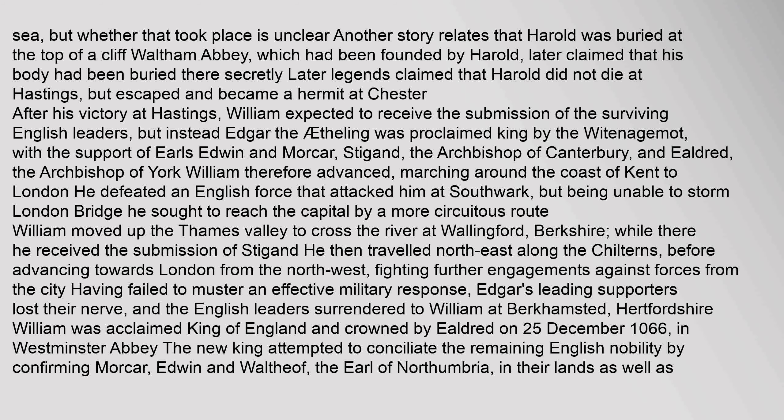After his victory at Hastings, William expected to receive the submission of the surviving English leaders, but instead Edgar the Aetheling was proclaimed king by the Wittenagemot, with the support of Earls Edwin and Morcar, Stigand the Archbishop of Canterbury, and Ealdred the Archbishop of York. William therefore advanced, marching around the coast of Kent to London. He defeated an English force that attacked him at Southwark, but being unable to storm London Bridge, he sought to reach the capital by a more circuitous route. William moved up the Thames Valley to cross the river at Wallingford, Berkshire. The English leaders surrendered to William at Berkhamsted. William was acclaimed king of England and crowned by Ealdred on 25 December 1066 in Westminster Abbey.